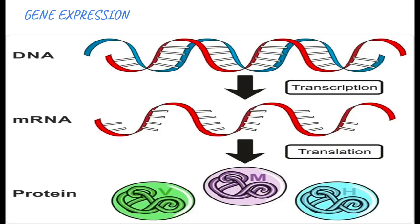The next important concept to understand is gene expression. Your genes carry instructions necessary to make proteins, which direct the activities of cells and the functions of the body. Your DNA is transcribed — information is changed from DNA to messenger RNA — a process known as transcription. Then your messenger RNA is used to form proteins, a process known as translation. Depending on your protein structure and consistency, this determines the structure and function of your cells.